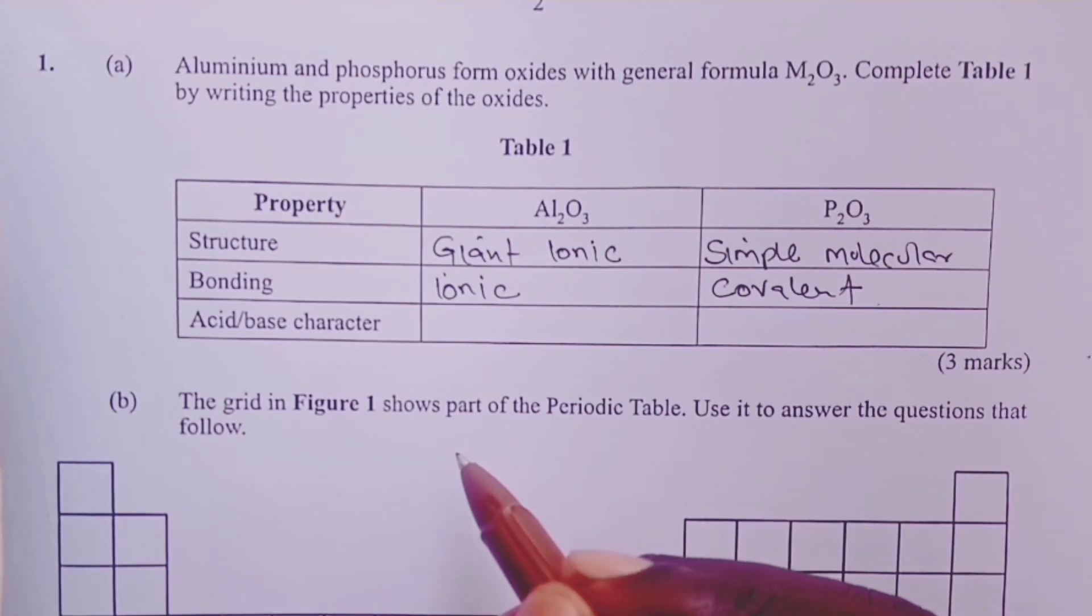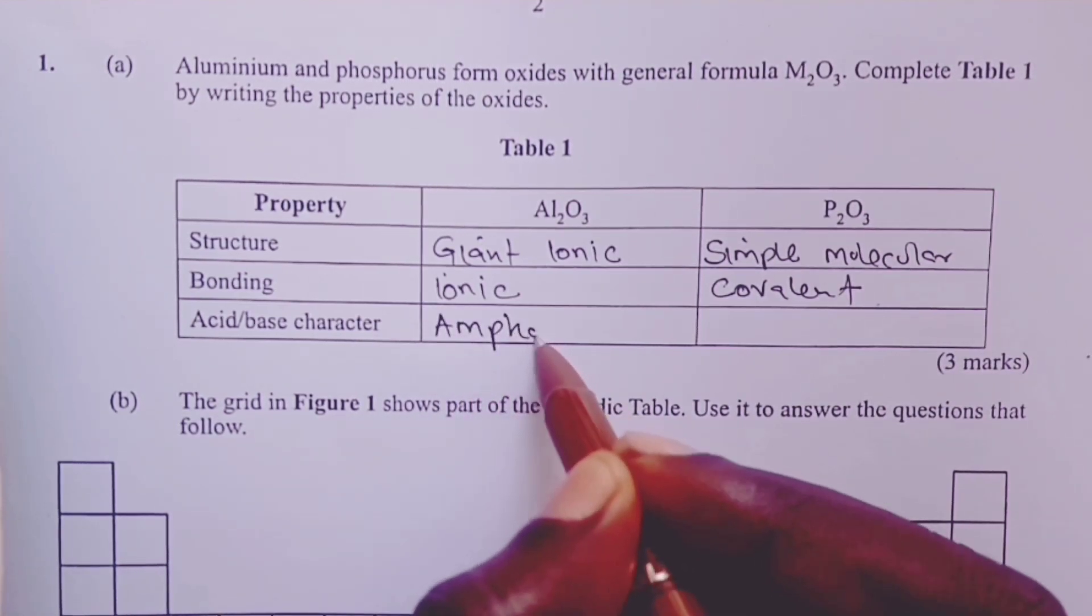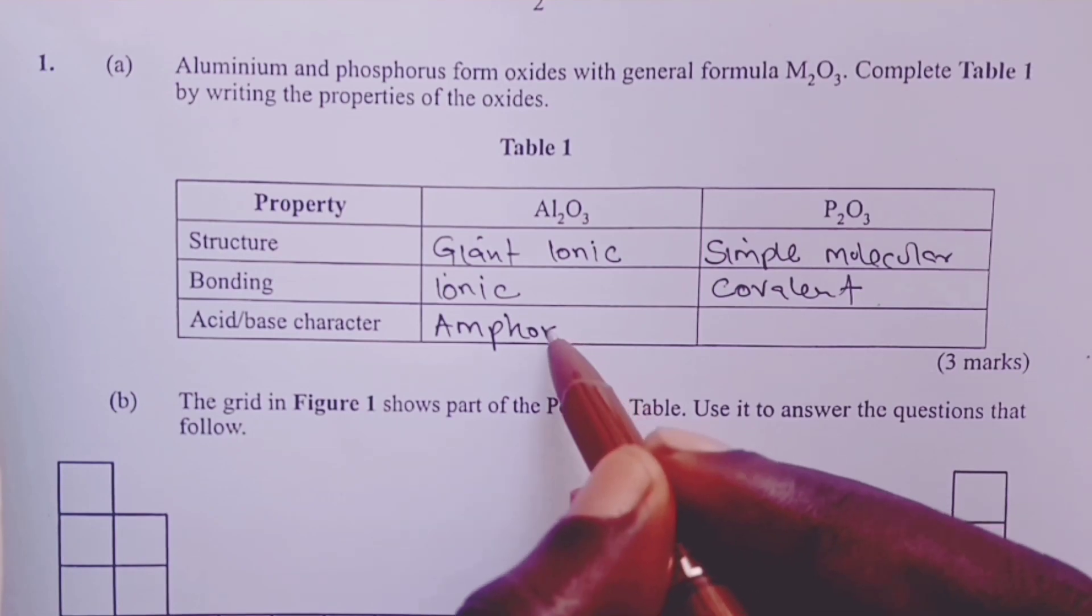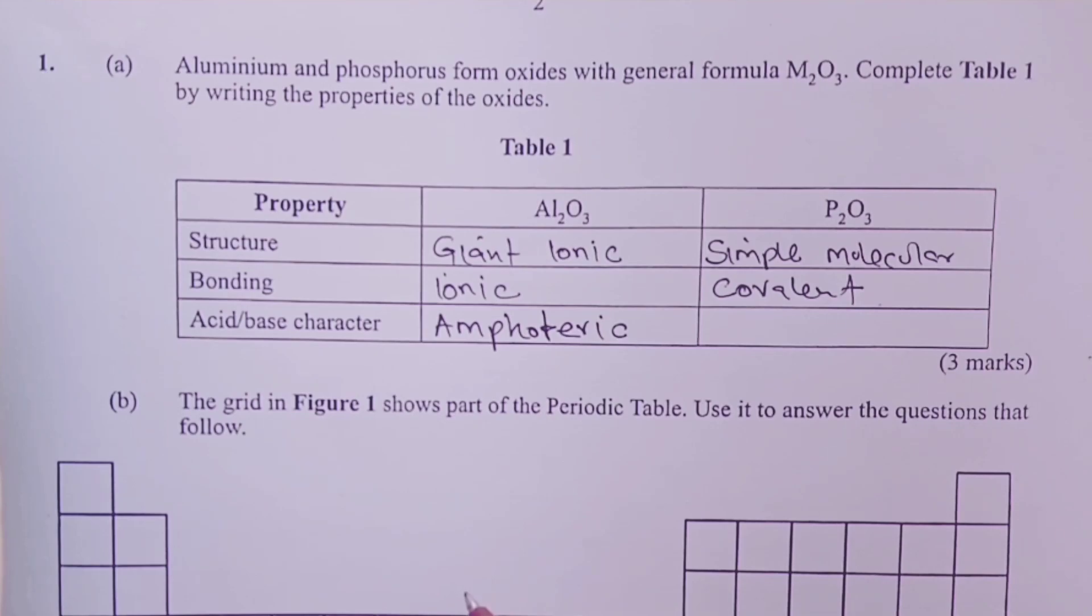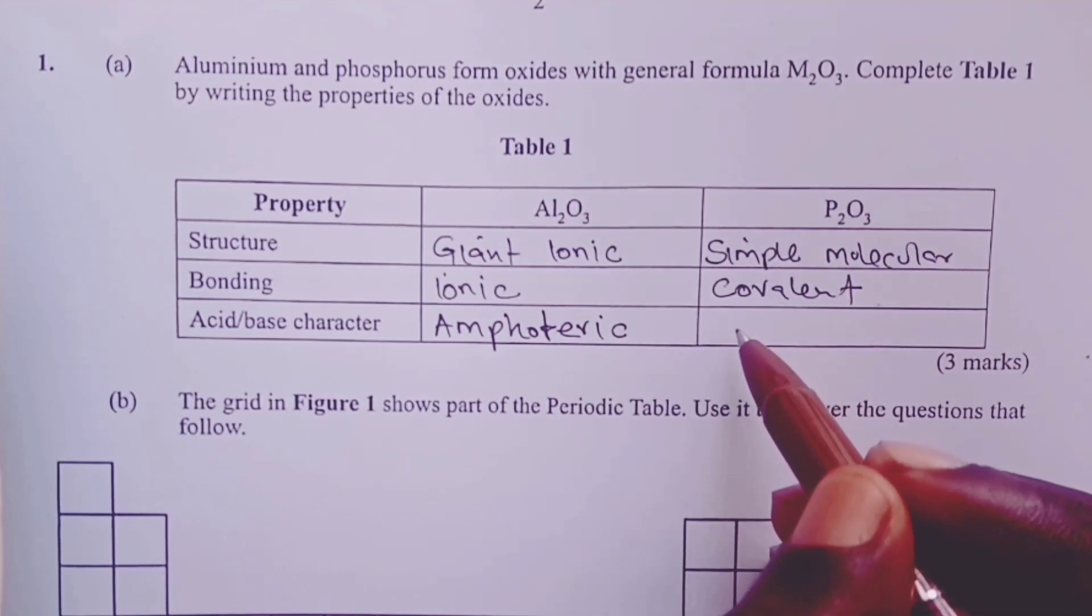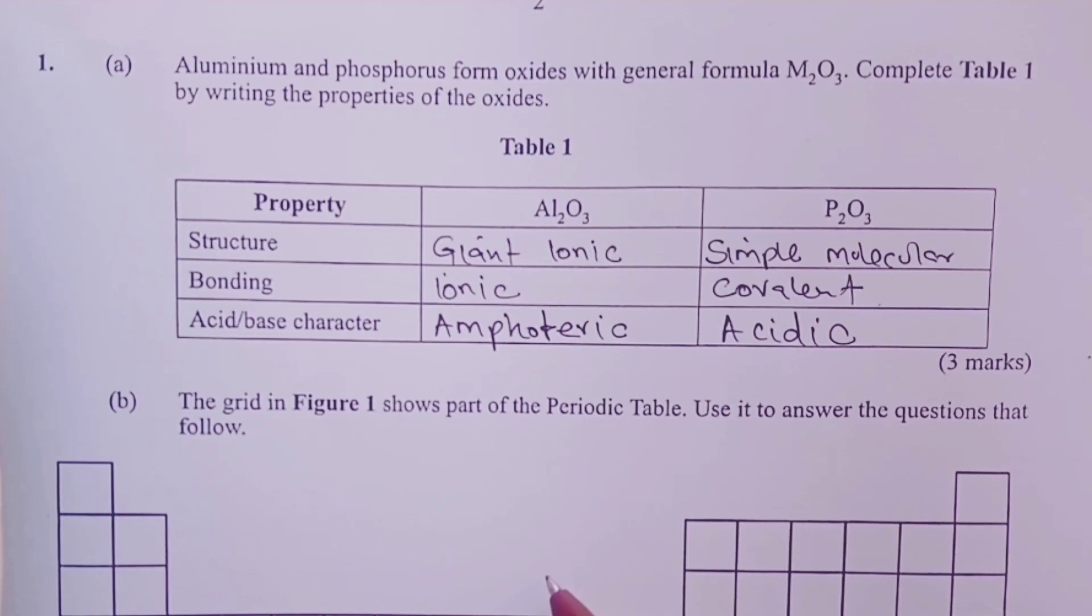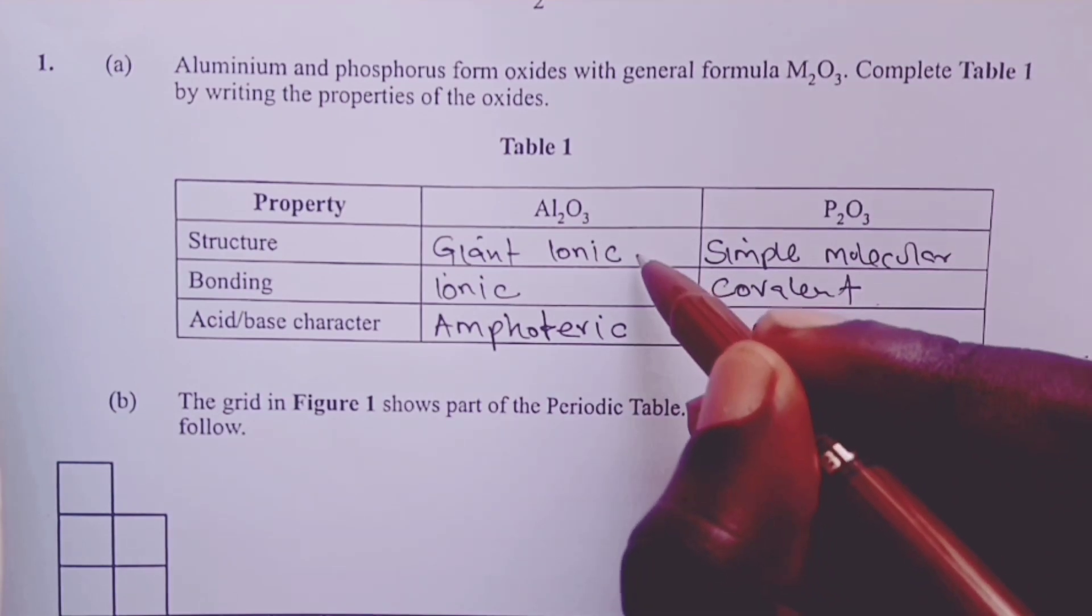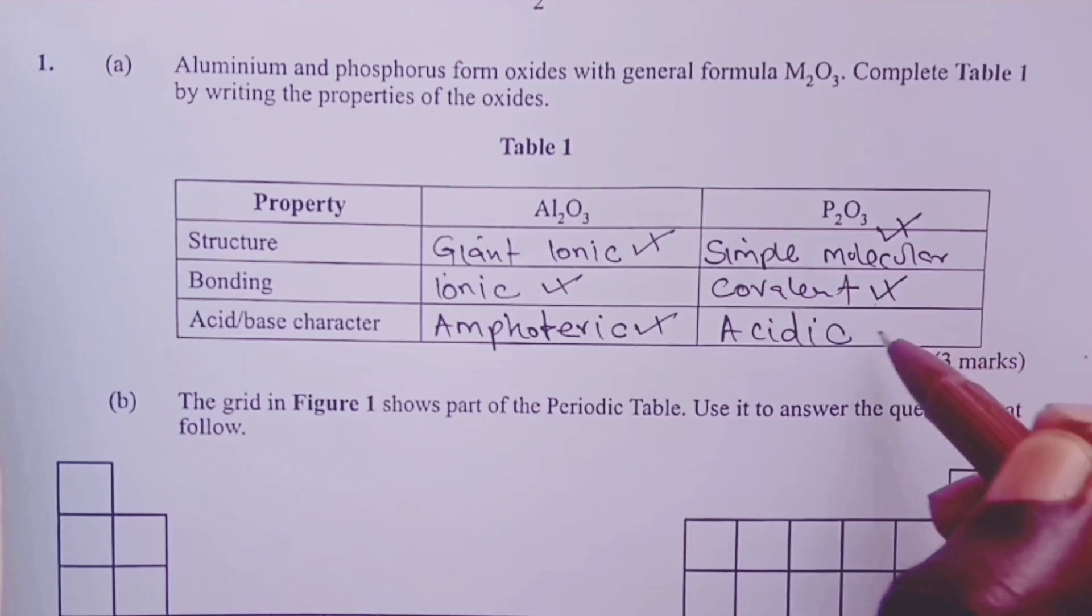Then on acid-base character, aluminum oxide, as we know, has properties of both acid and bases. So such substances we call them amphoteric substances. For the phosphorus oxide, it shows acidic properties. This table was marked out of three marks, so each of these properties were awarded half a mark.